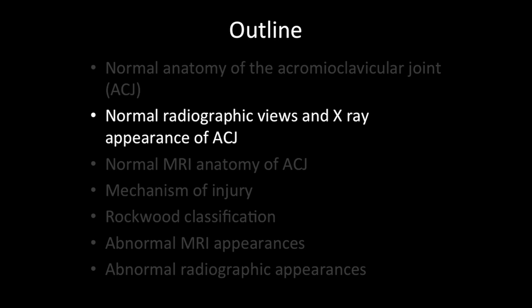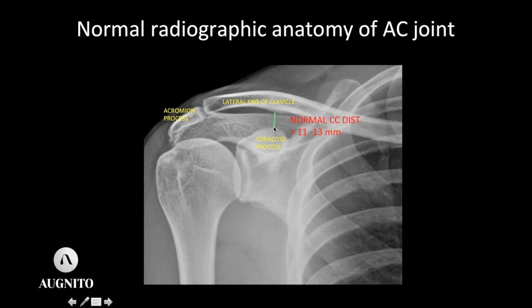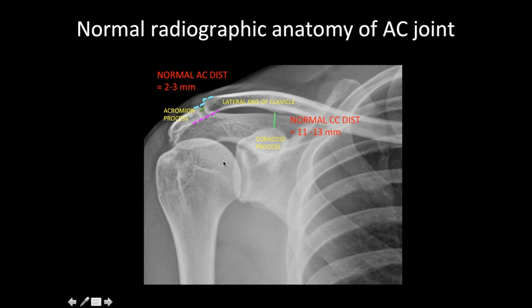This is the normal AP radiograph of the AC joint, showing the lateral end of the clavicle, the spine of the scapula forming the acromion process, the AC joint, the humerus articulating with the glenoid, and the coracoid process just above the glenoid. The normal coracoclavicular distance is about 11 to 13 millimeters, and the normal acromioclavicular joint space is about 2 to 3 millimeters. The inferior borders lie in the same plane, while the superior border may or may not align normally.